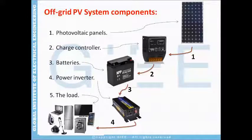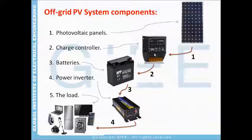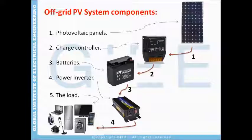These are the main components of an off-grid photovoltaic system: the photovoltaic panels, the charge controller, the battery bank, the power inverter, and the load. The photovoltaic panels supply power to the charge controller; the charge controller regulates current flow between the panels and the battery bank; the power inverter gets DC electricity from the battery bank and converts it to AC so we can power our loads.